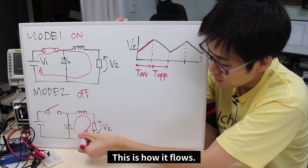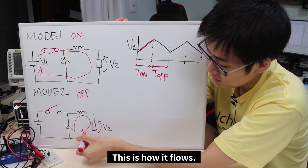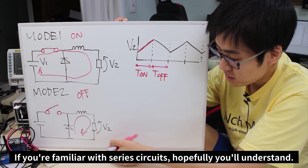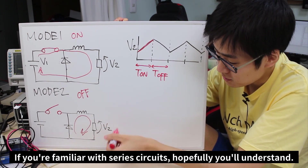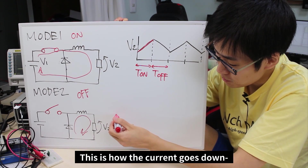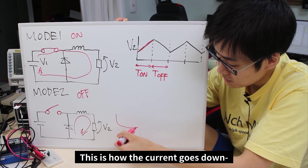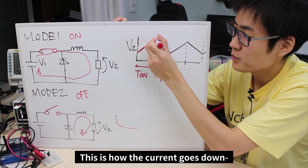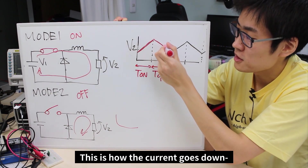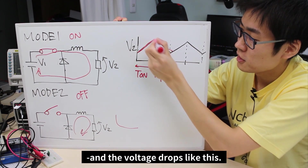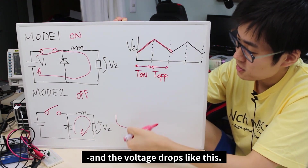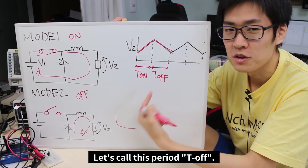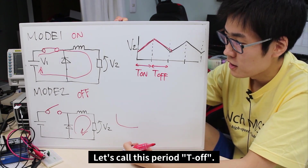The current in the inductor can't instantly be reduced to zero, so it flows through this diode. If you're familiar with series circuits, hopefully you'll understand. This is how the circuit goes down. During mode 2, the voltage begins to drop — we can call this period T off.